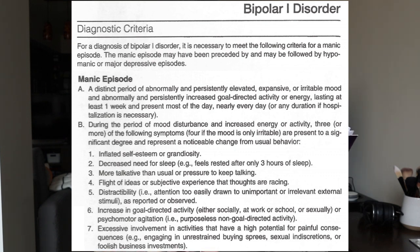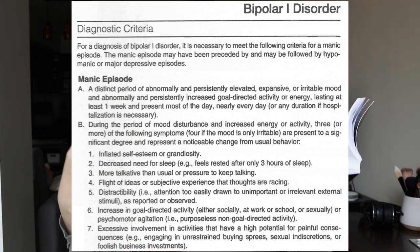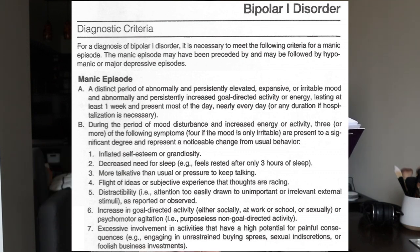Symptom three: more talkative than usual or pressure to keep talking. Symptom four: flight of ideas or the subjective experience that thoughts are racing. Symptom five: distractibility. Symptom six: increase in goal-directed activity — either socially, at work or school, or sexually — or psychomotor agitation, meaning physical restlessness like shaking or tapping. Symptom seven: excessive involvement in activities that have a high potential for painful consequences, such as engaging in unrestrained buying sprees, sexual indiscretions, or extreme business investments.